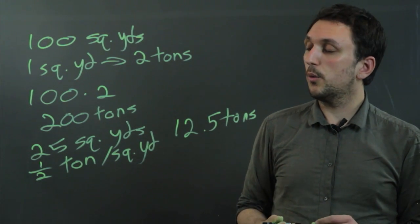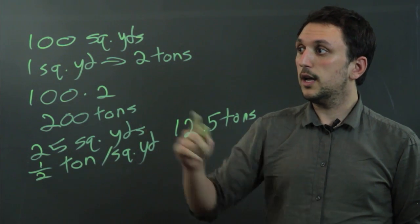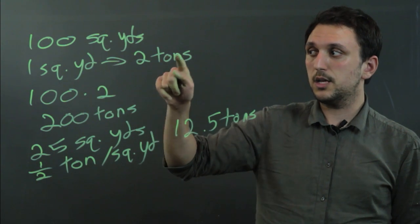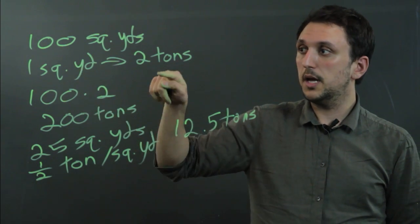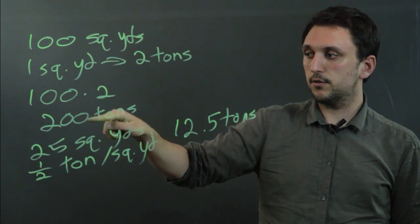So to repeat, the way we figure out the number of tons from square yards is we have to know the density. We have to know how many tons per single square yard. And then we multiply that number by the total number of square yards, and that gives us the number of tons.